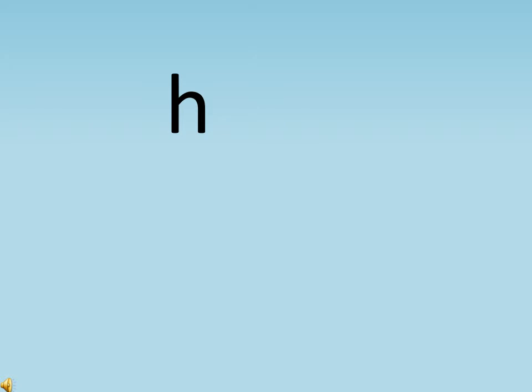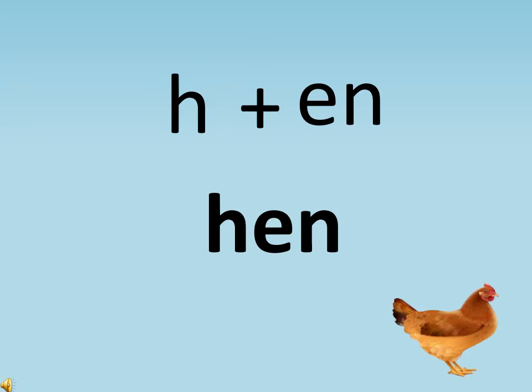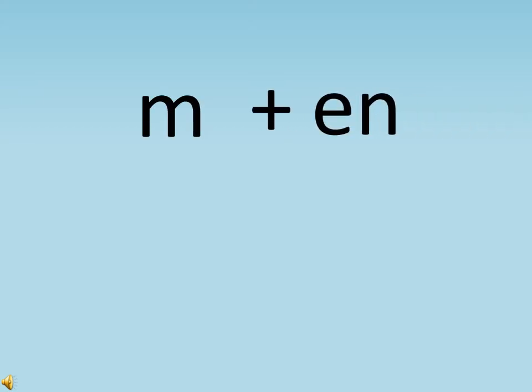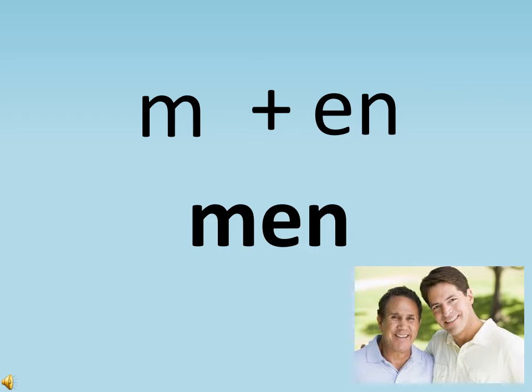Now let us begin reading the EN family words. As you can see, H says 'h', H plus EN gives you 'hen'. We don't say 'h' alone — we say H plus EN is 'hen'. Moving to the next word: M plus EN will say 'men'.